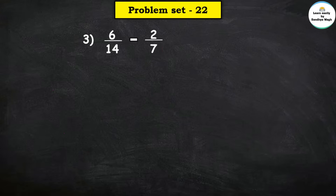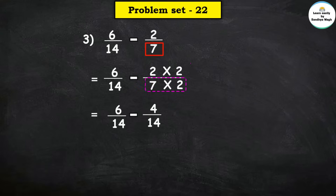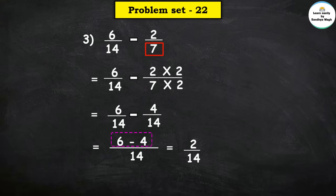Next: 6 upon 14 minus 2 upon 7. First fraction denominator is 14, second fraction denominator is 7. 7 table: 7, 2s are 14. Write 6 upon 14 as it is. Minus 2 upon 7: multiply denominator 7 by 2 to get 14, and numerator 2 by 2 as well. So: 2 times 2 = 4, 7 times 2 = 14. Common denominator 14. Numerator: 6 minus 4 = 2, denominator 14. Final answer is 2 upon 14.